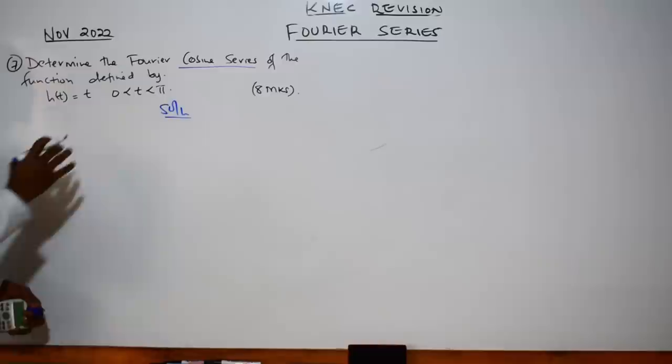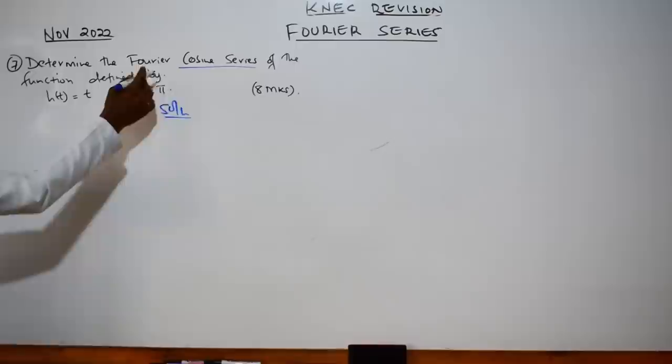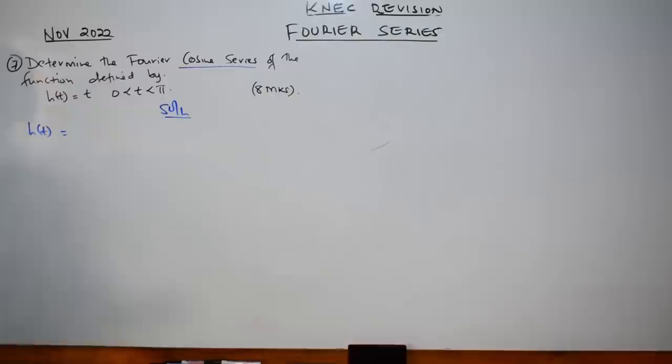We are told to determine the Fourier cosine series of the function h(t), defined from 0 to π. Our range is from 0 to π. This question is straightforward because you've been told to find the cosine series, which means this function is an even function. If it were a Fourier sine series, we would be finding only the odd part.